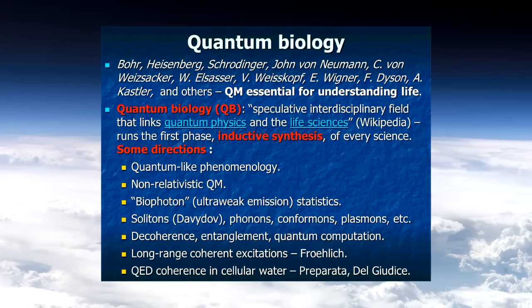The current expansion of quantum biology actually goes back to the founders of quantum mechanics, who already thought biology could be a place where quantum effects play a role. Schrodinger wrote a book, 'What is Life?' in 1944, grappling with unsolved problems of biology — mainly negative entropy, creating order — many of which could be solved with quantum concepts.